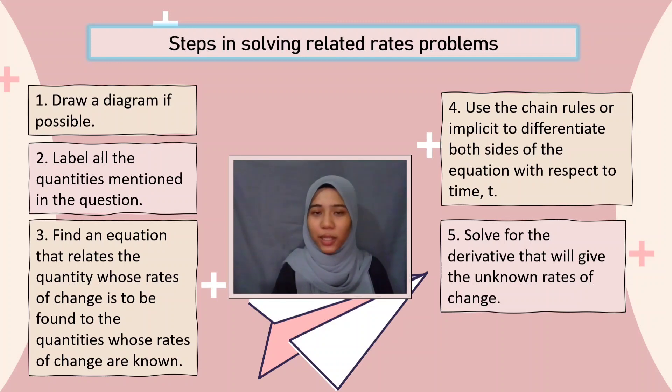Use either chain rules or implicit to differentiate both sides of the equation with respect to time. And lastly, solve for the derivative that will give the unknown rates of change.